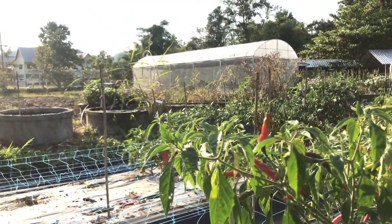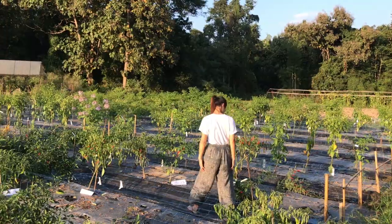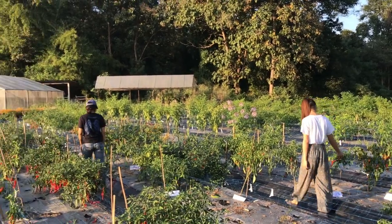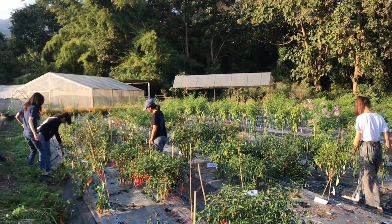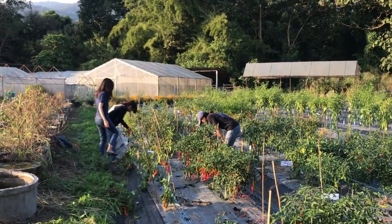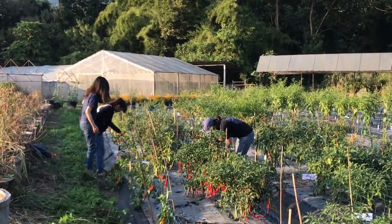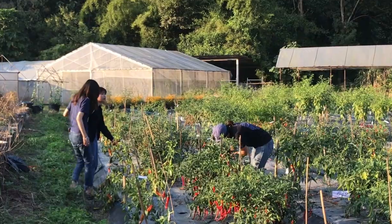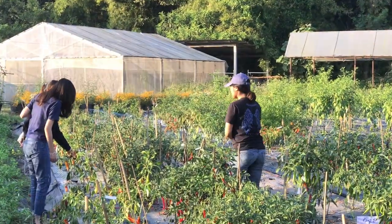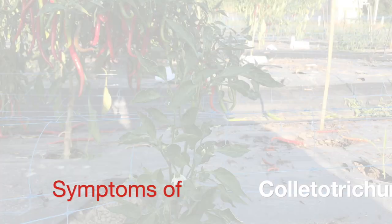Anthracnose disease is caused by Colletotrichum species, which belong to the kingdom Fungi, phylum Ascomycota, the anamorph of Glomerella species.